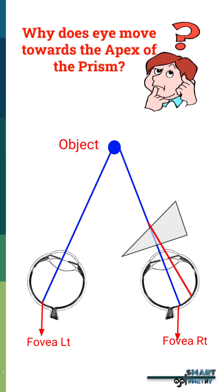Due to bending rays towards the base of the prism, the ray that was focused on the fovea now will fall in an extrafoveal area.